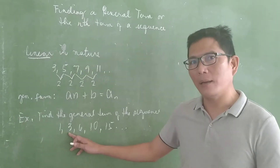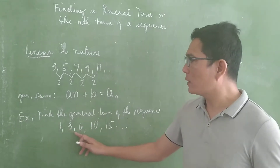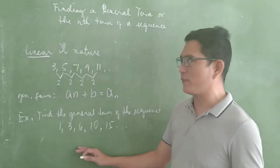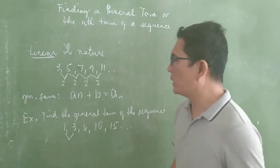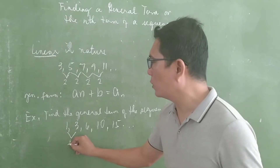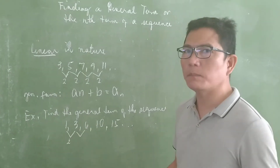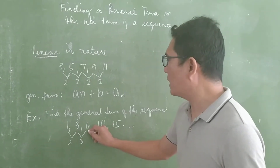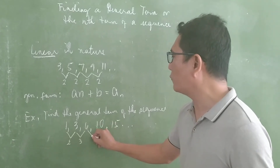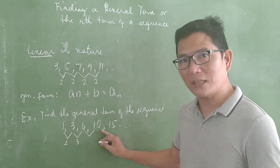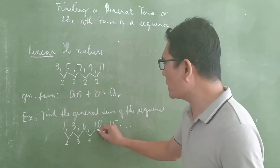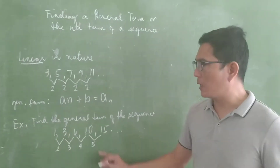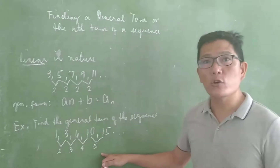The difference between the first and second term is 2. From the second to the third term, the difference is 3. From the third to the fourth term, 6 to 10, the difference is 4. And from the fourth to the fifth term, 10 to 15, the difference is 5. So the differences are not common — this sequence is not linear in nature.